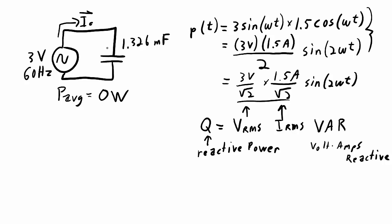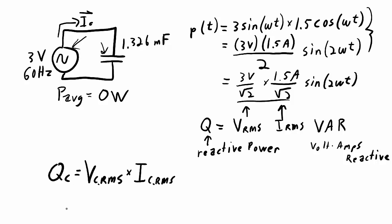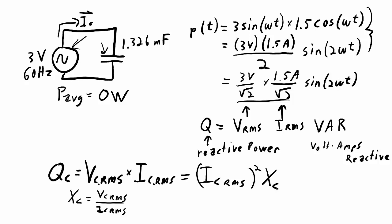We have this power oscillating back and forth between the capacitor and the voltage source — positive power being delivered to the capacitor when the current is positive, and when the current is negative it's going back into the source. We can quantify that peak amount of power as the reactive power. I've rewritten that equation with a denotation to indicate this is capacitive reactive power. Recalling that the reactance of a capacitor equals the RMS voltage across it divided by the RMS current through it, we could also write the reactive power as I_C(RMS) squared times the reactance of the capacitor, or as V_C(RMS) squared divided by the reactance of the capacitor.